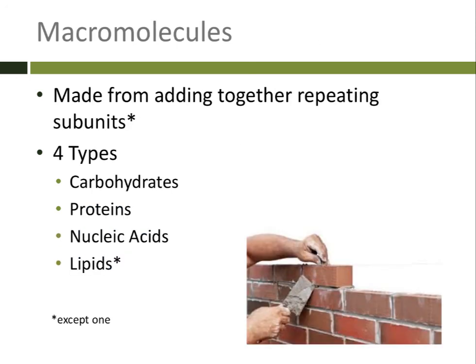When we create larger molecules, we call them macromolecules. And again, they're just made from adding together our subunits. There are four types of macromolecules in the body: carbohydrates, proteins, nucleic acids, and lipids.